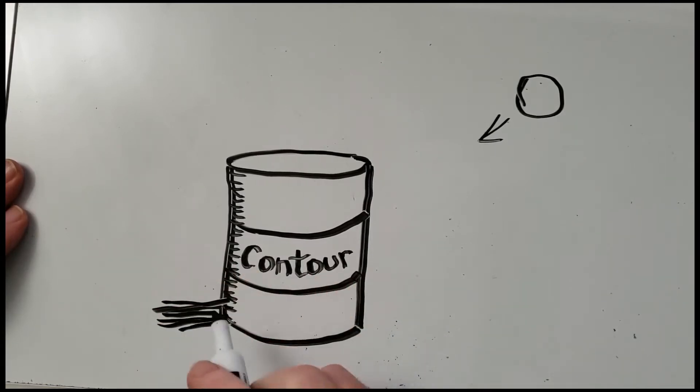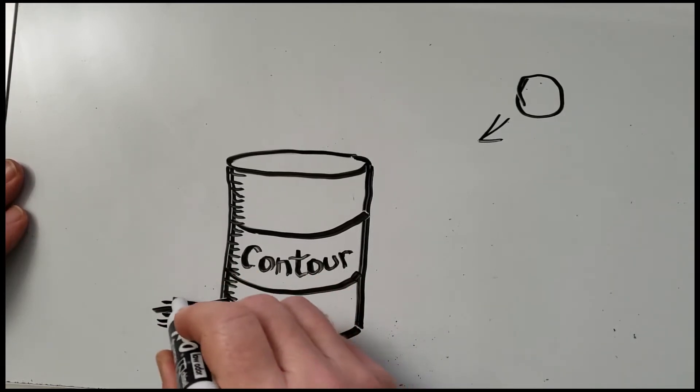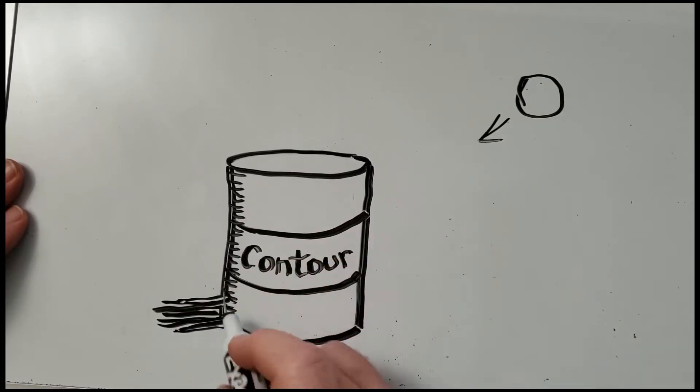So that's four words so far. We've got foreshortening, contour, shade, and shadow.